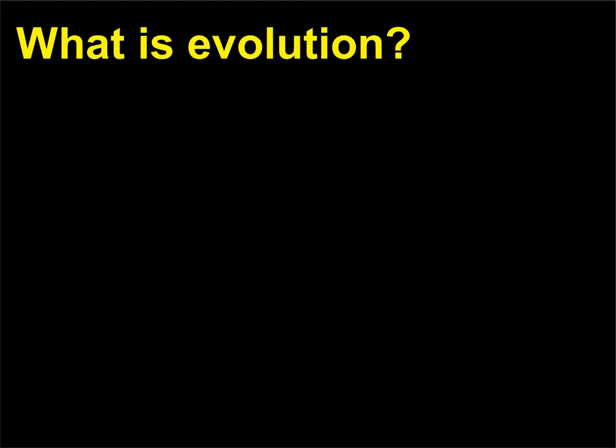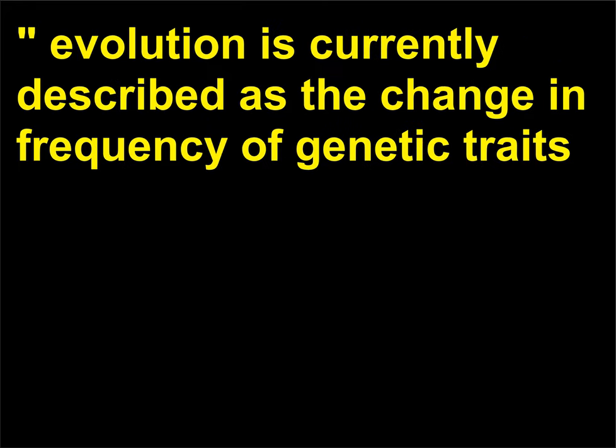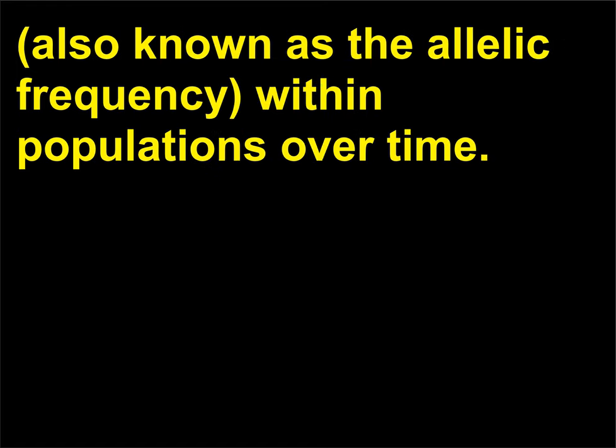What is evolution? Although it was originally defined in the 19th century as descent with modification, evolution is currently described as the change in frequency of genetic traits — also known as the allelic frequency — within populations over time.